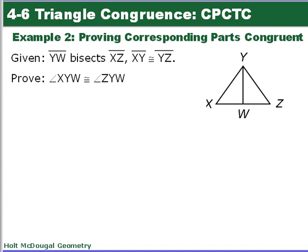We're going to go through a proof. Given that YW bisects XZ, and XY is congruent to YZ, we want to prove that angle XYW is congruent to angle ZYW.